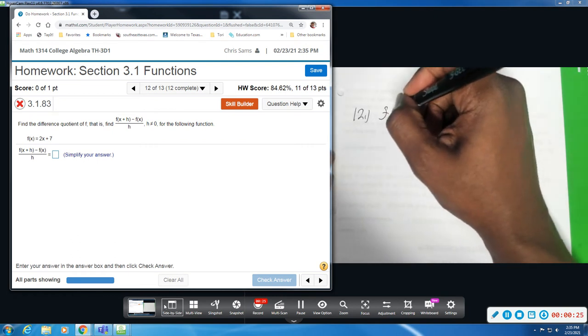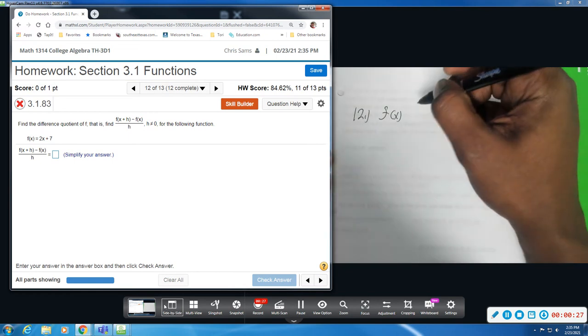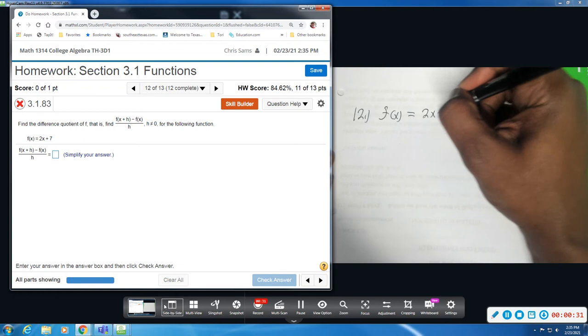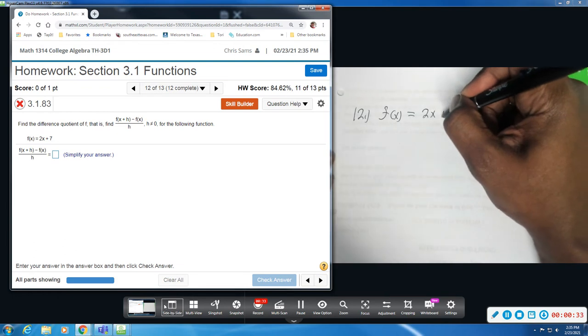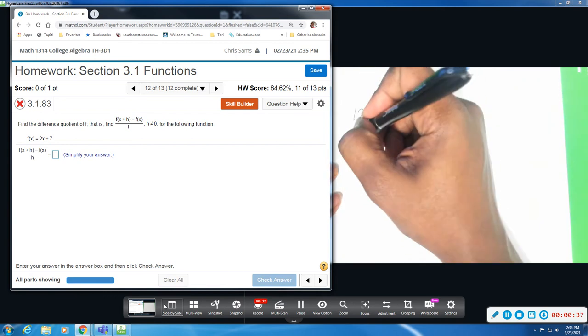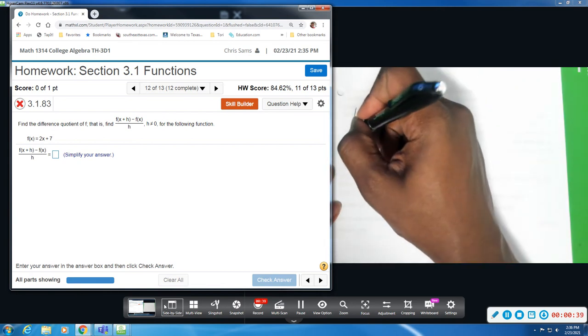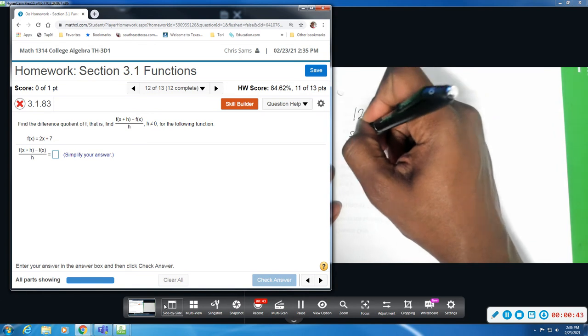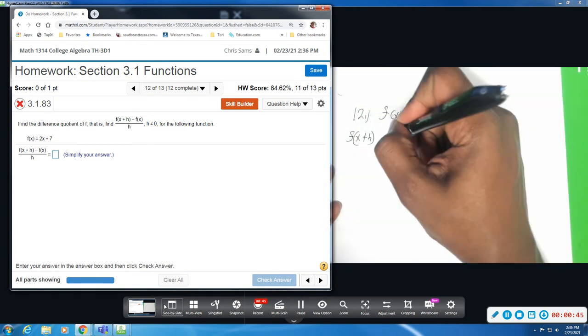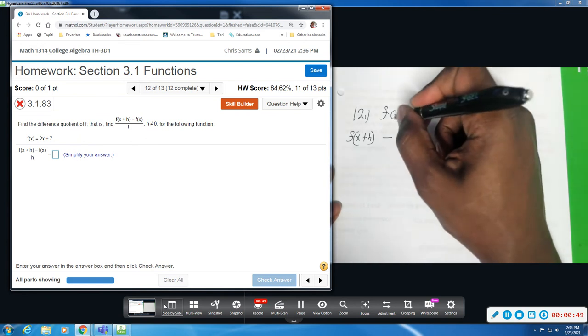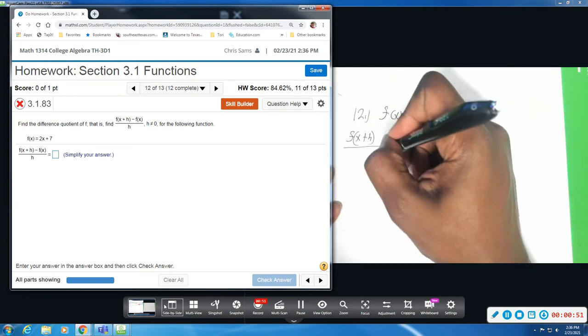Just remember the function notation. We are given f of x equals 2x plus 7. And what we want to do is we want to find f of x plus h. As you can see that is part of it. We are going to subtract that from f of x, the original function, and then divide that by h.